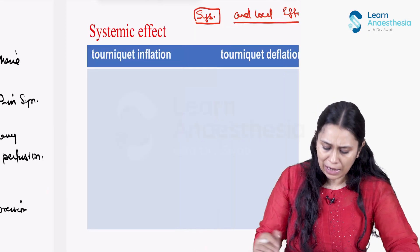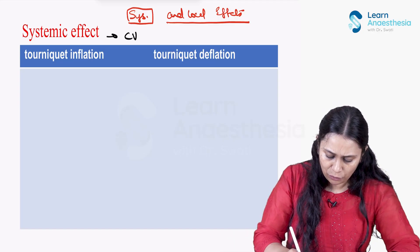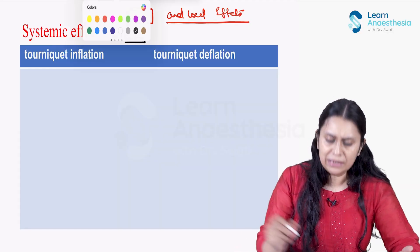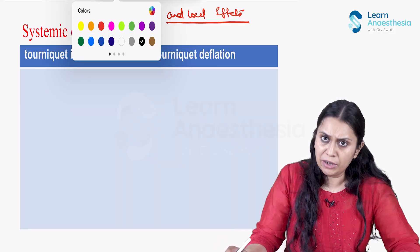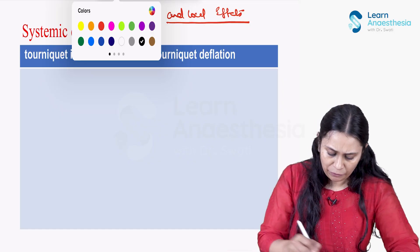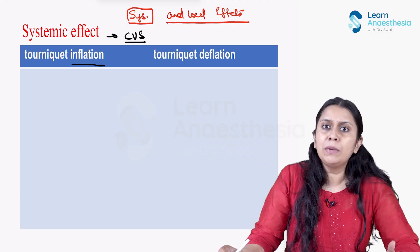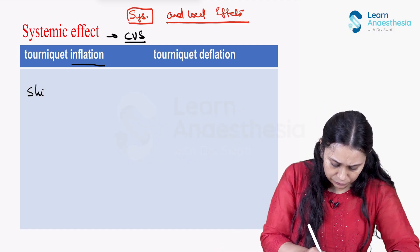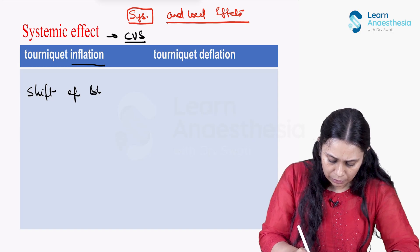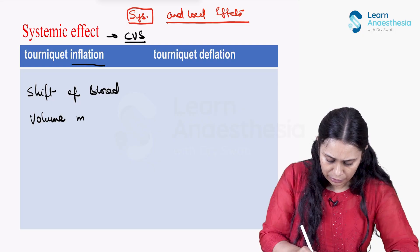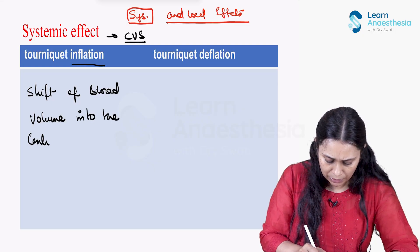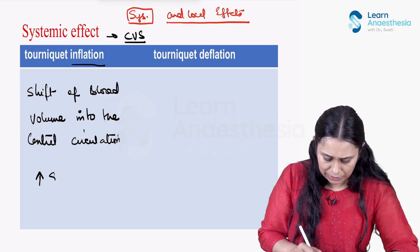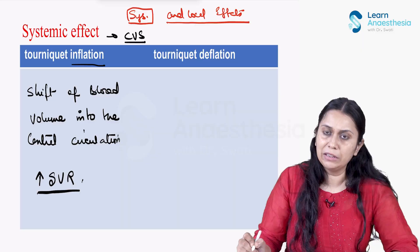Let us discuss the effect on the cardiovascular system. During tourniquet inflation, blood shifts into the central compartment — central circulation. More blood returns to the heart, which increases systemic vascular resistance. This shift of blood volume into the systemic circulation means there is a possibility that blood pressure will increase during inflation.